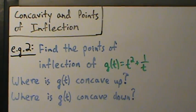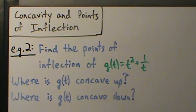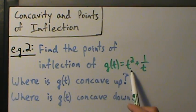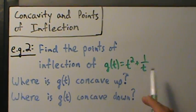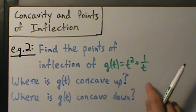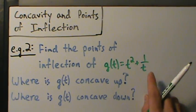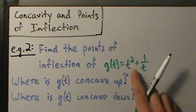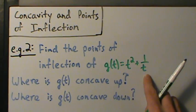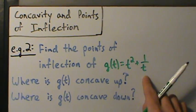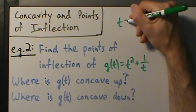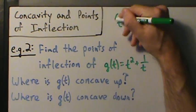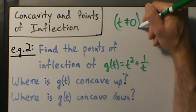So let's point out the domain of this function. g of t equals t squared plus one over t. Do we have any domain restrictions? Yes — t can't be zero, because we're doing one divided by t, and we're not allowed to divide by zero. So that's our only domain restriction. Let's write it down off to the side for reference.